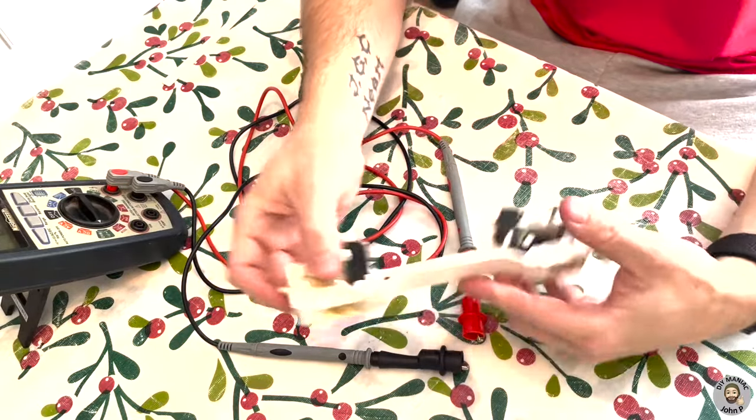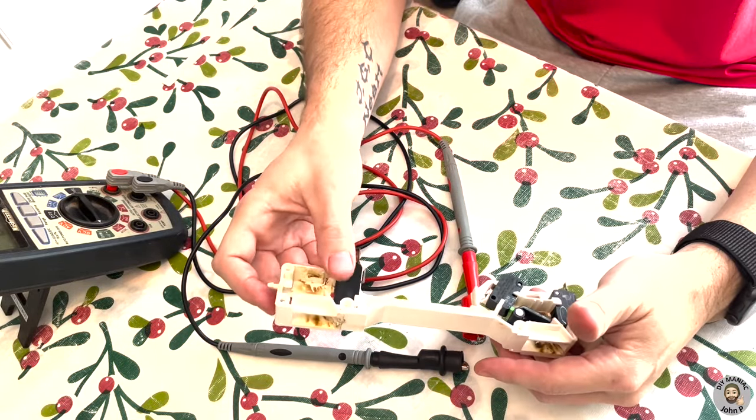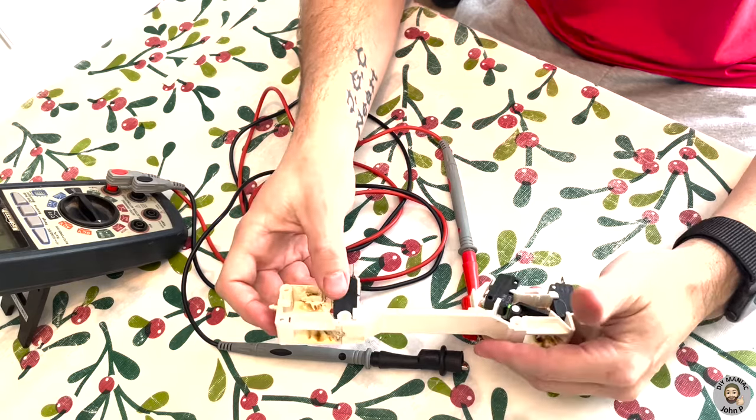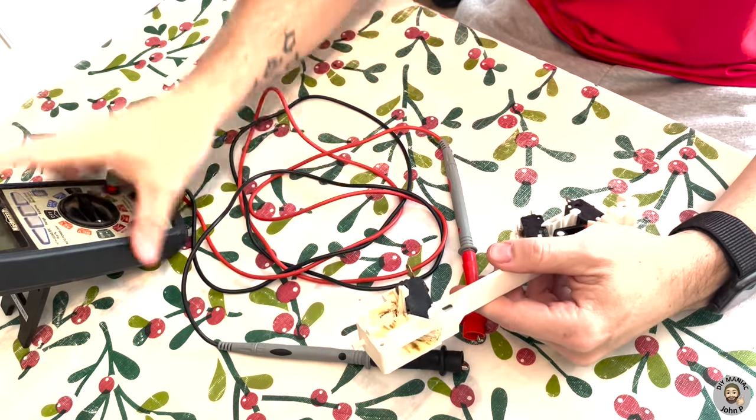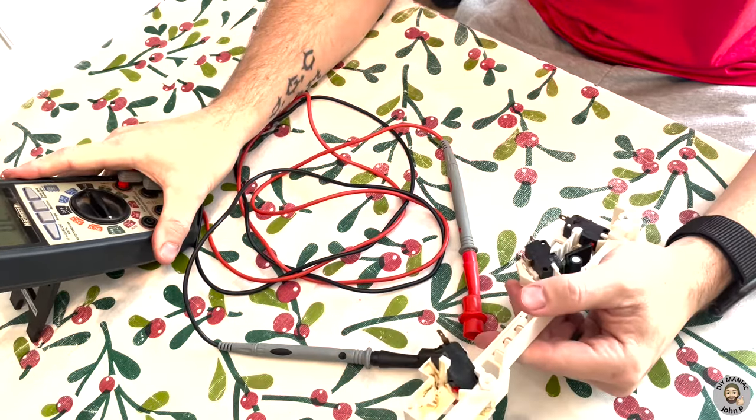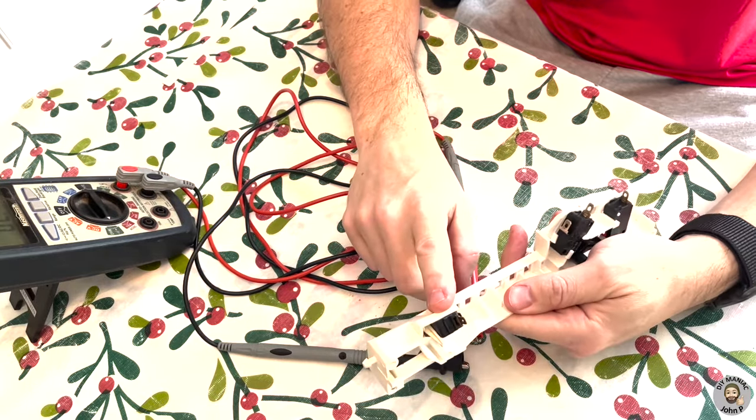Okay guys, so here we are with the switch assembly. Now we want to diagnose which of the switches, or multiple switches, are faulty. So to do that, we're going to use our multimeter. We're going to do continuity checks.